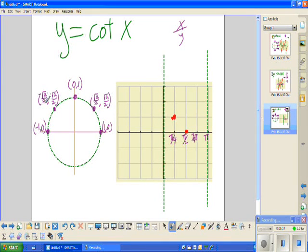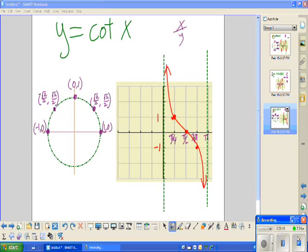We have negative square root of 2 over square root of 2 over 2, which is negative 1. I'm going to put 1 and negative 1 here. And then lastly, we have negative 1 over 0, which is undefined. Okay, so you can see how our graph is going to look like this for cotangent.